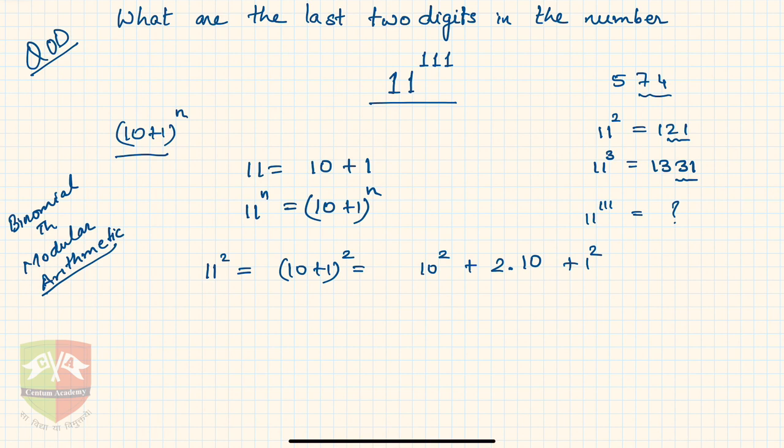Next, 11 to the power 3, and 11 to the power 3 is nothing but 10 plus 1 to the power 3. And you know the identity a plus b whole cube and you will get 10 cube plus 3 times 10 square plus 3 times 10 plus 1. So I'm not writing 1 cube here, I'm just writing 1.